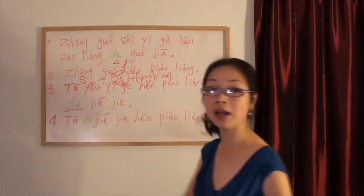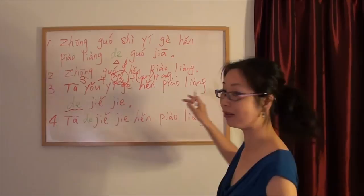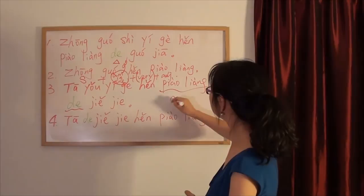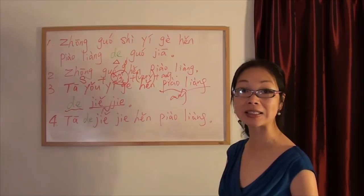很漂亮的姐姐 is still the second function of de. It means connect the adjective and the noun. You have to use de to connect the adjective and the noun.